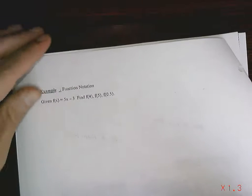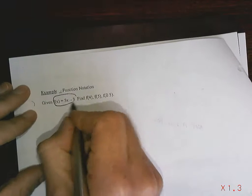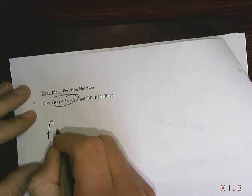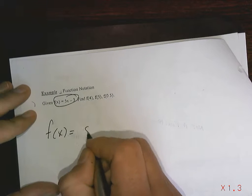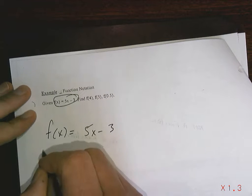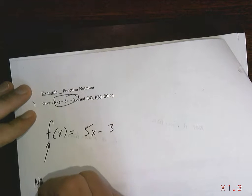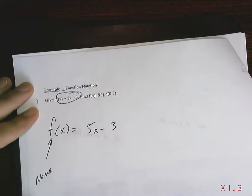We have an example here for function notation. This is function notation, I've taught it to you before. This is the name of the function. I called it F, I could have called it G.